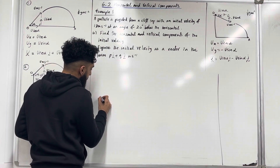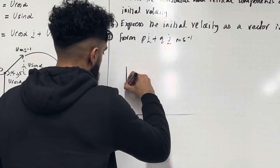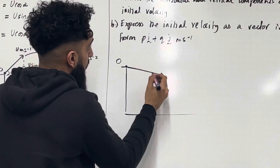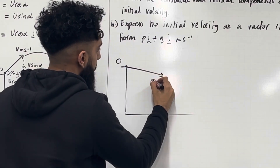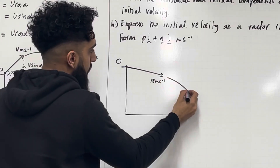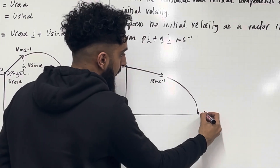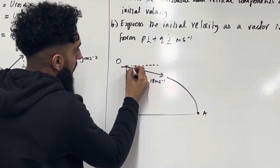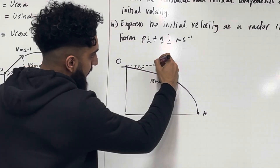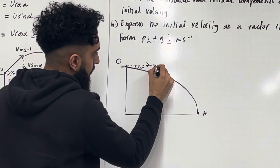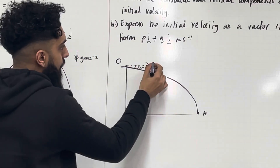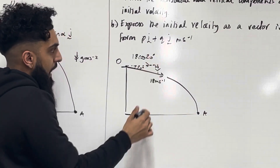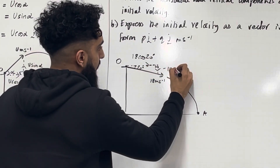We have a horizontal ground, then a cliff top — we can call this point O. Here is the particle, projected at 18 meters per second. This is the pathway of the particle; it will strike the ground at point A. The initial velocity forms an angle of 20 degrees below the horizontal. We can form a right-angle triangle and put in the arrows. This component will be 18 cos 20 degrees, and this component will be minus 18 sin 20 degrees.